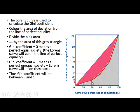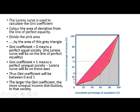Therefore, as we know, the Lorenz curve will lie somewhere in between, so the Gini coefficient will be between 0 and 1. The larger the Gini coefficient, the further the Lorenz curve lies to the right, and the more unequal the income distribution in that society.